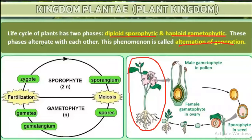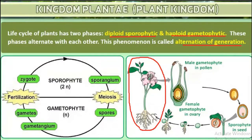The phenomenon by which the diploid sporophytic phase and the haploid gametophytic phase alternate with each other is known as alternation of generation. We will study the sporophytic and gametophytic phases in detail in the coming chapters.